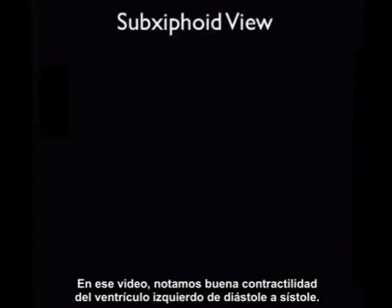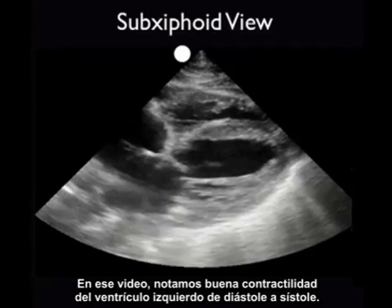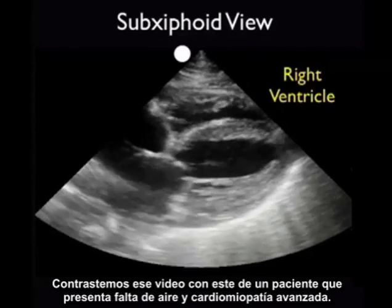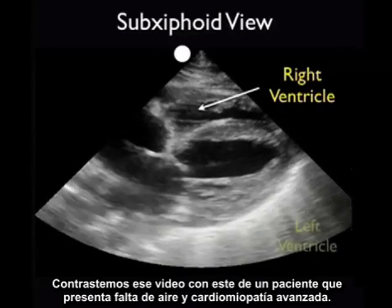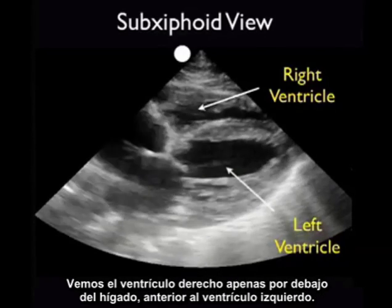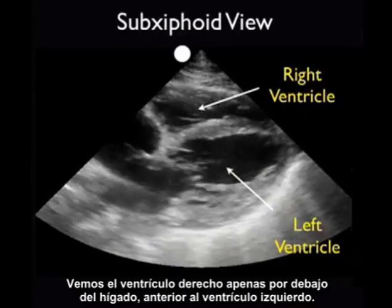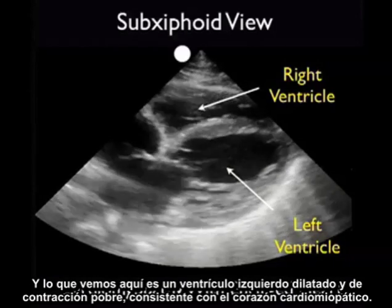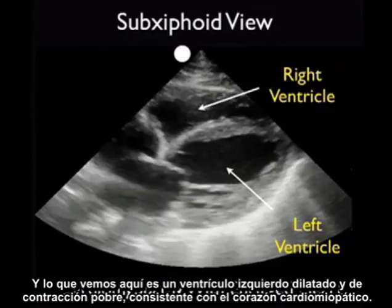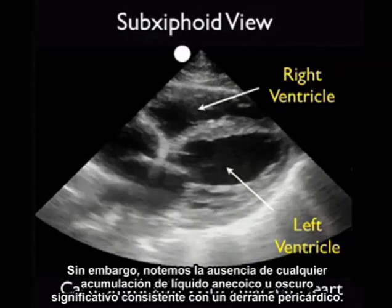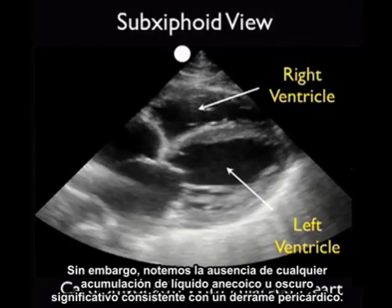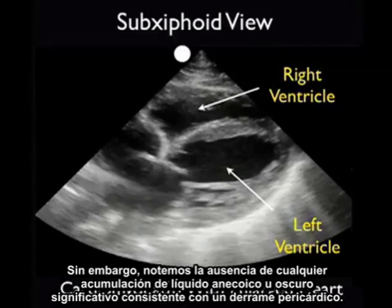In that last clip we noted good contractility of the left ventricle from diastole to systole. Let's contrast that to this clip from a patient who presented with shortness of breath and advanced cardiomyopathy. We see the right ventricle just below the liver, anterior to the left ventricle, and what we see here is a poorly contracting and dilated left ventricle consistent with a cardiomyopathy heart. However, note the absence of any significant dark or anechoic fluid collections consistent with a pericardial effusion.